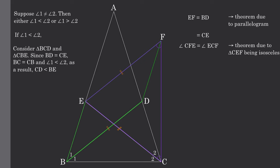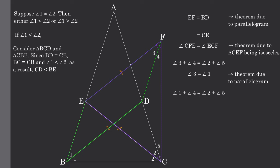Next, let's label our angles 3, 4, and 5. We know that angle 3 plus angle 4 equals angle 2 plus angle 5. We also know that angle 3 equals angle 1 based on the definition of a parallelogram. By replacing angle 3 with angle 1, we see that angle 1 plus angle 4 equals angle 2 plus angle 5. But since angle 1 is less than angle 2, in order to satisfy this equation, angle 4 must be greater than angle 5.